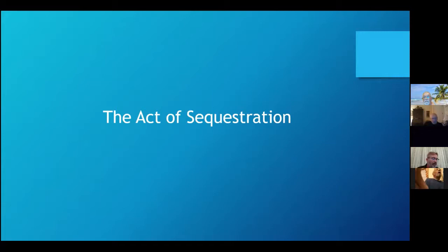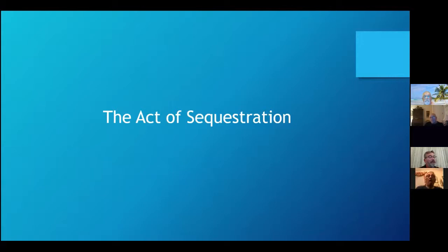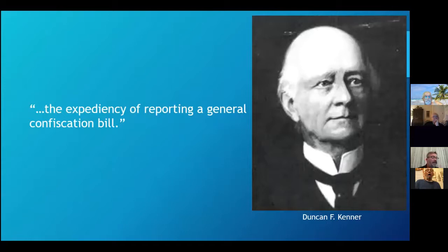Official government confiscation of private property during the Civil War began on August 6, 1861, when the United States Congress approved the first Confiscation Act, which laid the legal groundwork for federal forces to confiscate Southerners' private property being used to aid the rebellion. Although not directly mentioned in the act itself, it was understood and later confirmed by executive order that property included slaves, or contraband as they would come to be known. With slave property now under direct threat by federal confiscation, the Confederate government in Richmond was compelled to act. A resolution introduced by Louisiana Congressman Duncan Kenner urged the Confederate Congress to consider the expediency of reporting a general confiscation bill, and drafting a reciprocal policy of confiscation became the Confederate government's top priority.